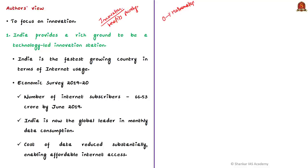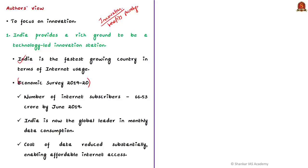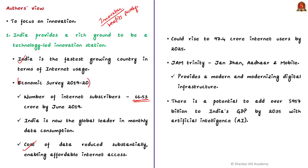The current global chaos is the best opportunity to innovate. The first reason India provides a rich ground for technology-led innovation is that India is the fastest growing economy in terms of internet usage. The number of internet subscribers was around 66 crores according to the last Economic Survey. India is the global leader in monthly data consumption, and cost of data has reduced substantially, enabling affordable internet access for millions. The current 66 crores of internet subscribers could rise to 97 crores by 2025.